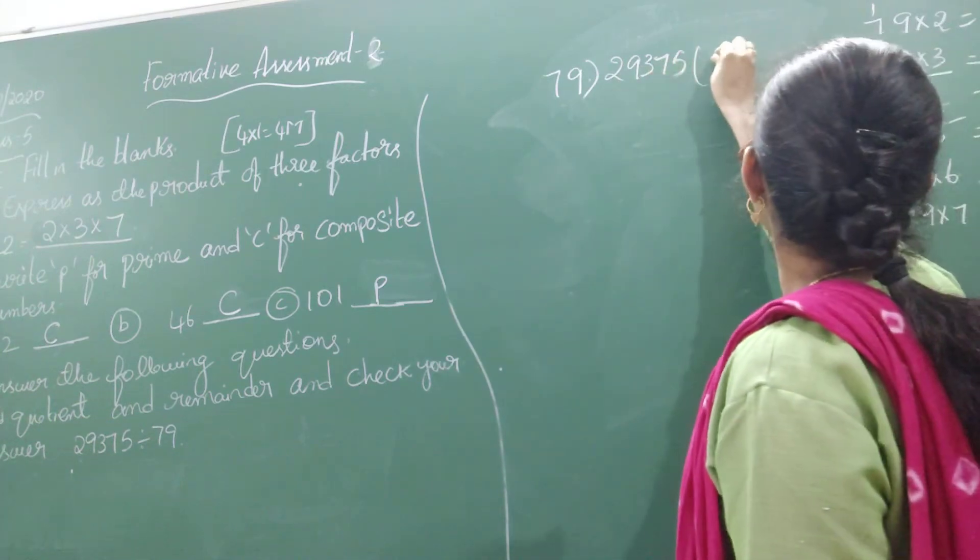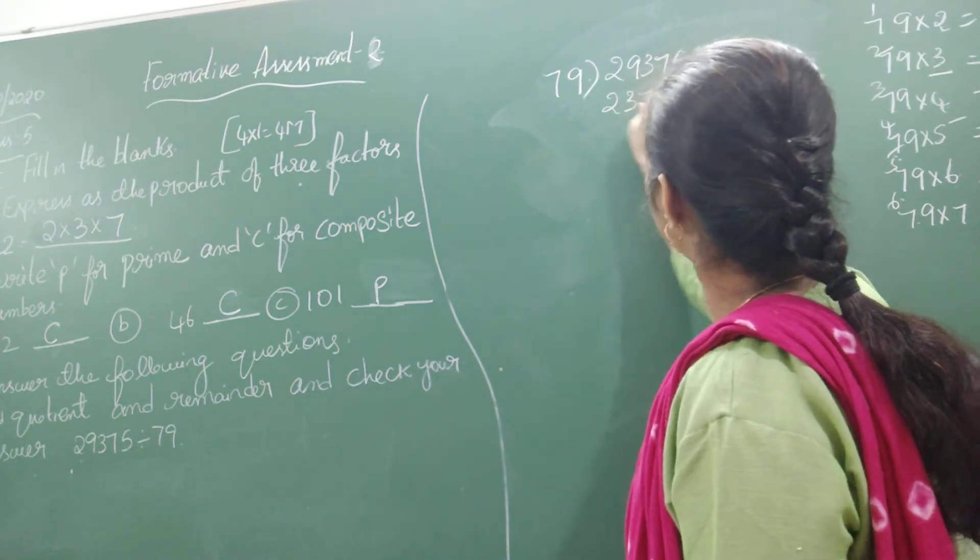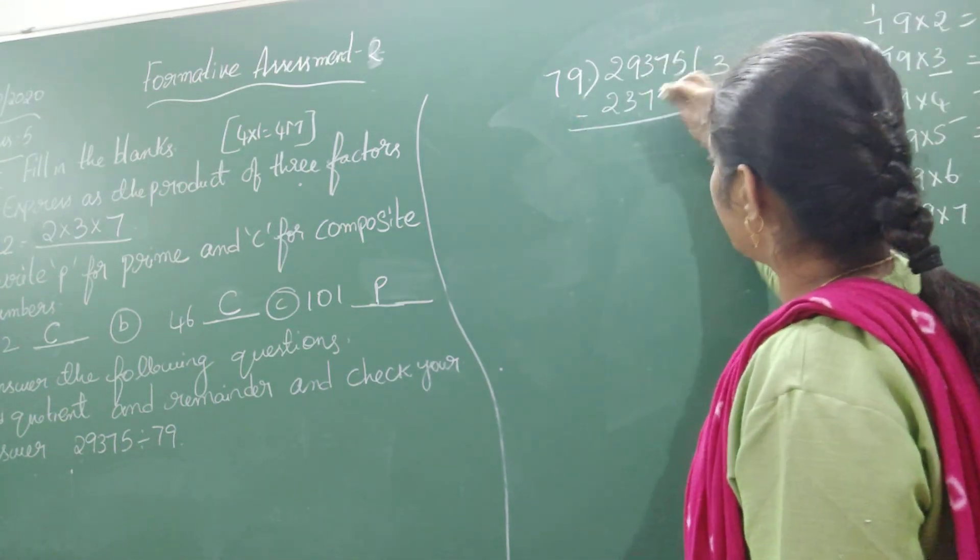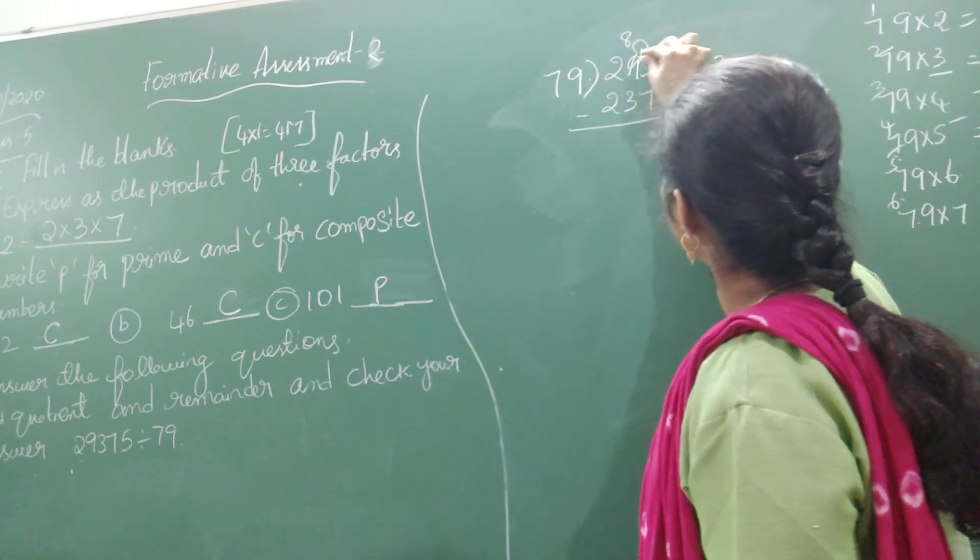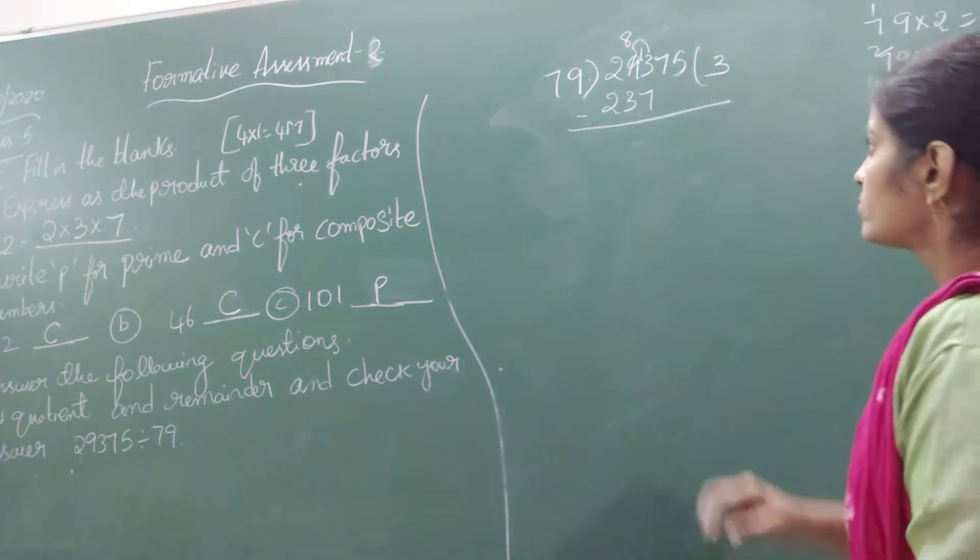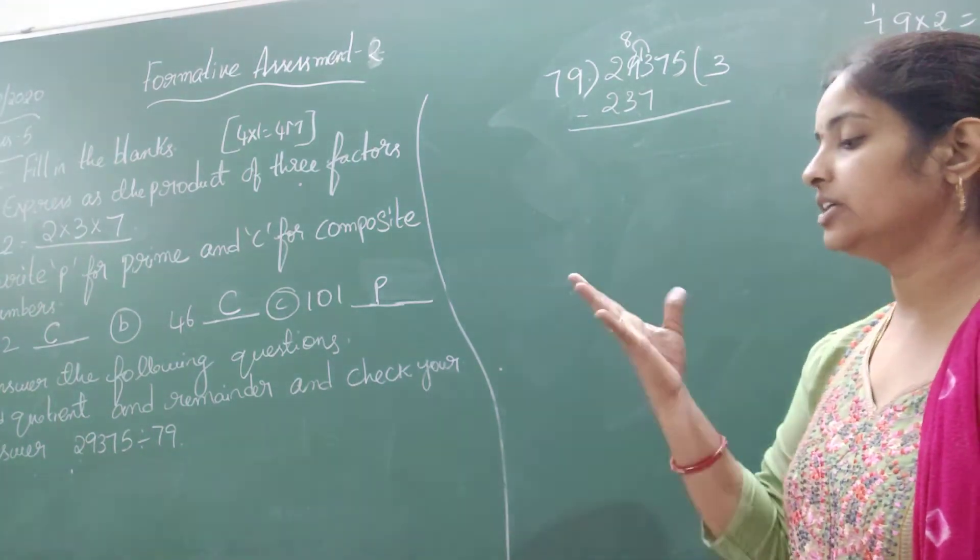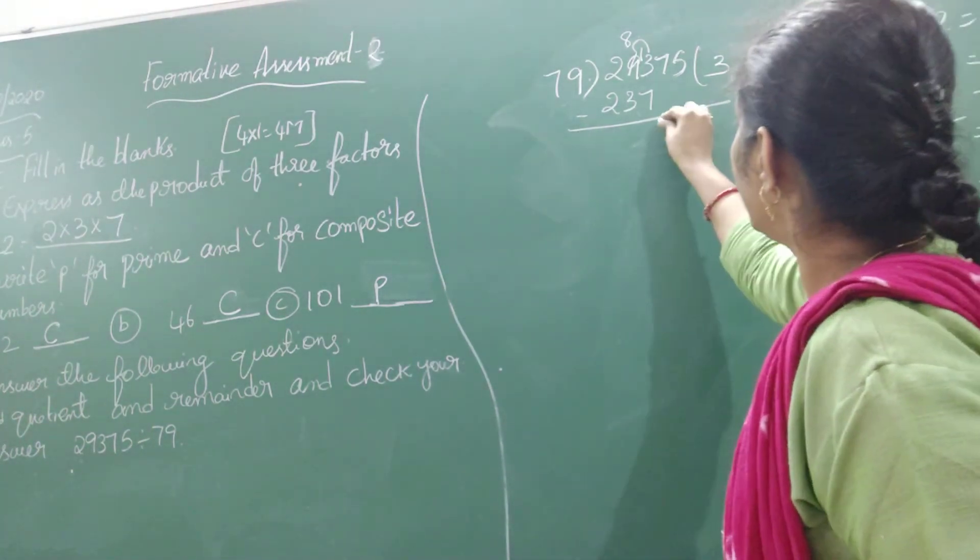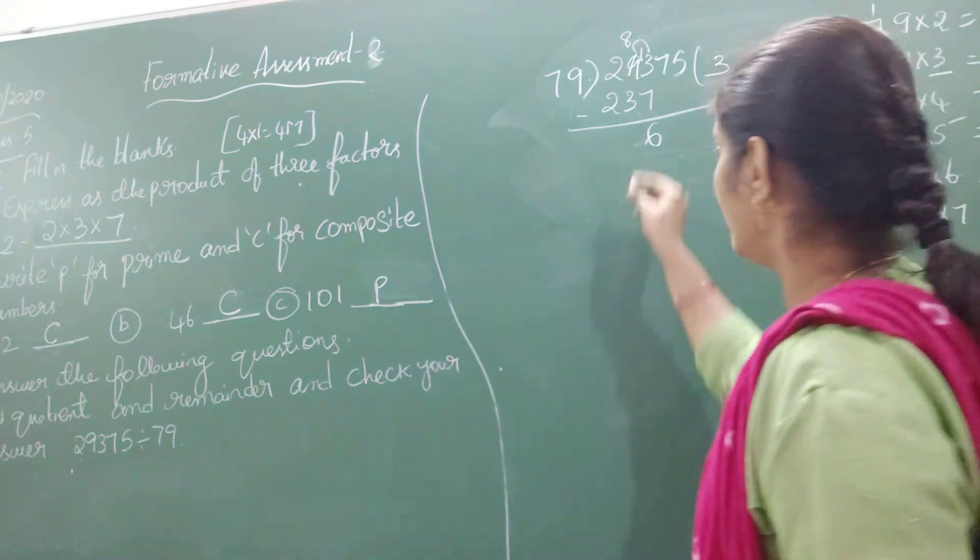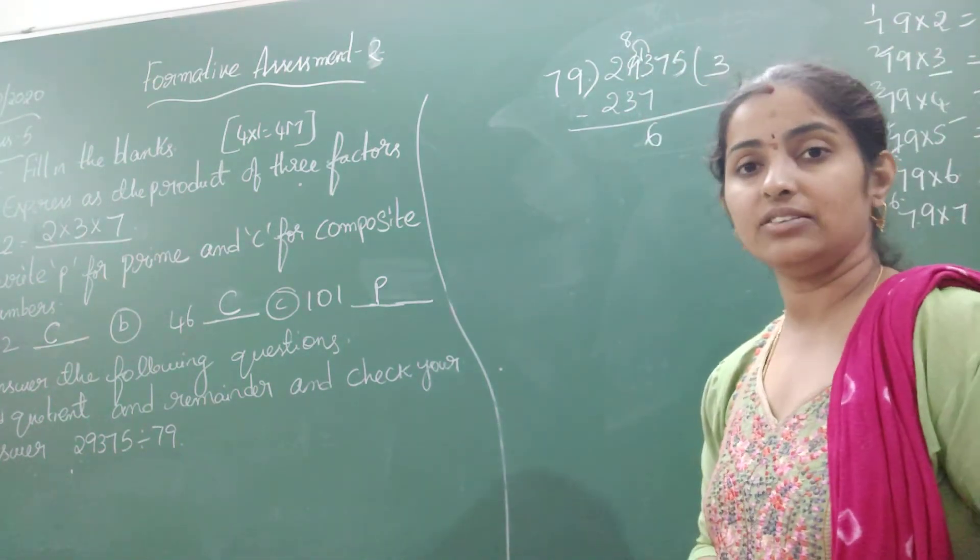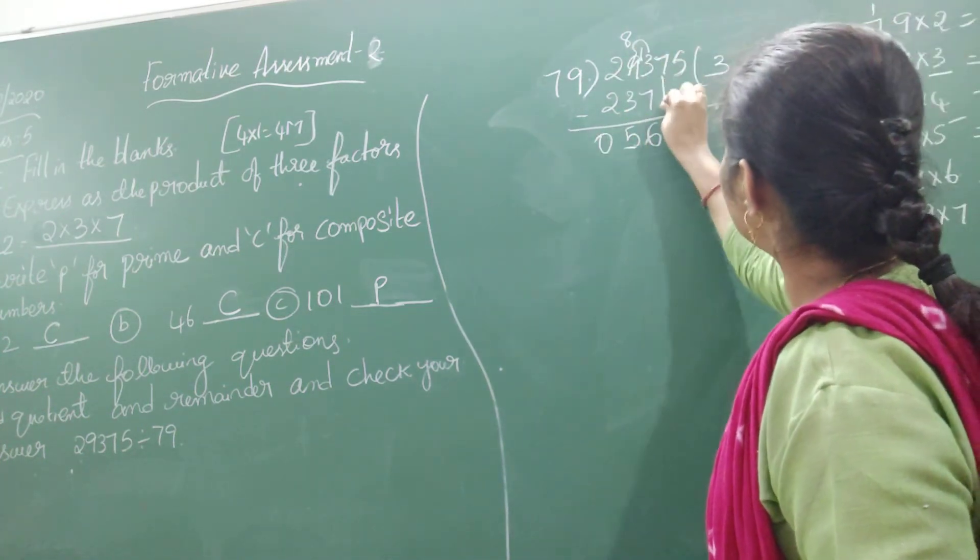79 times 3 is 237. Now subtract. 3 minus 7 not possible, so take a borrow. We will get 13 here and 8 in place of 9. That gives us 6. 8 minus 5 is 3, and 2 minus 2 is 0.